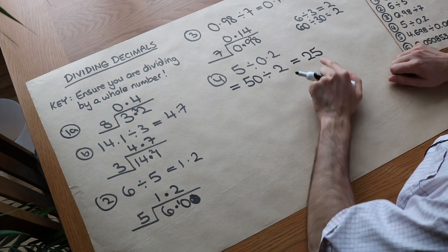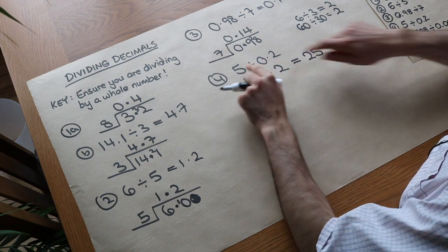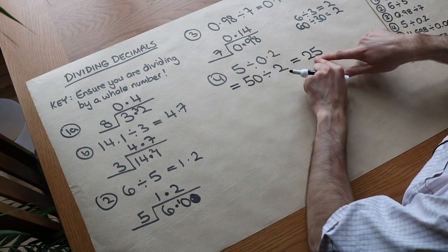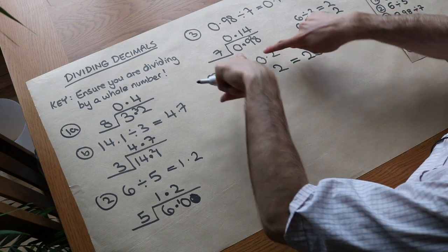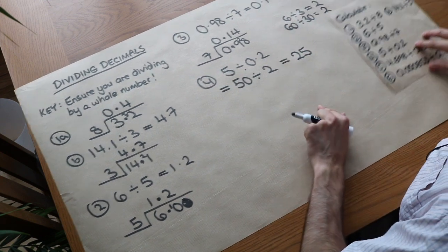And some students get confused here. They think that they have to now adjust this, but because we times these by 10, we have to somehow divide this by 10. But note, this is the same as that. So that is the answer.